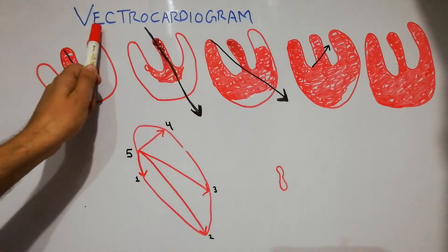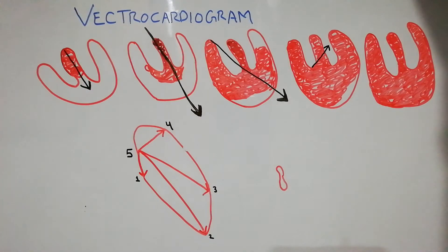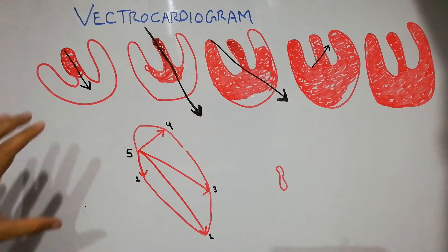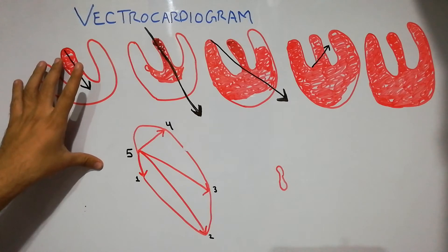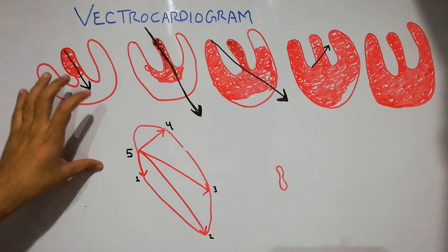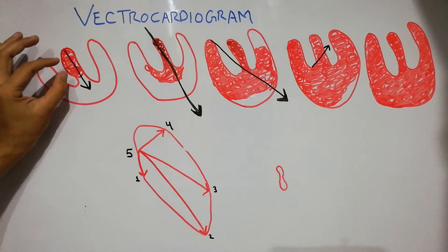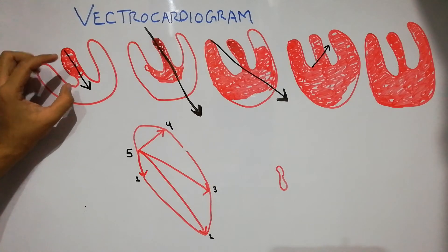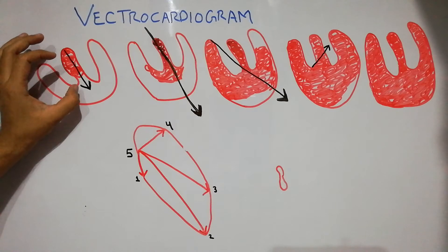Today we are going to discuss the Vectorcardiogram. When the depolarization process of the ventricle starts, it begins in the septum, and at that point it gives a vector which is positive in direction.